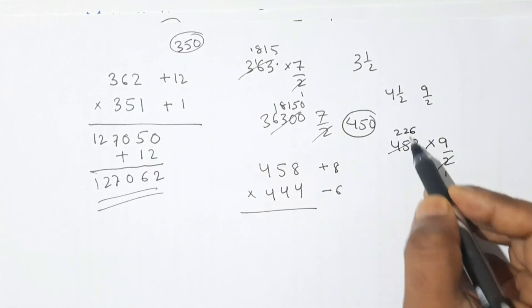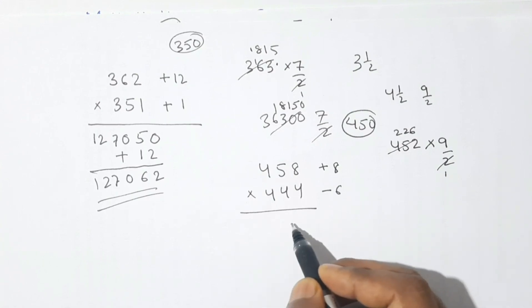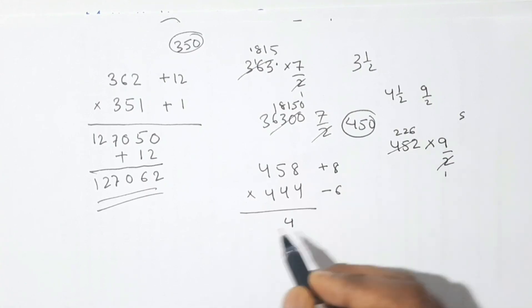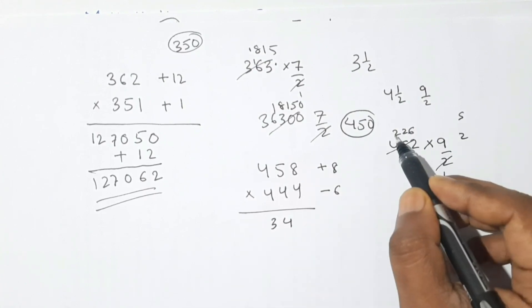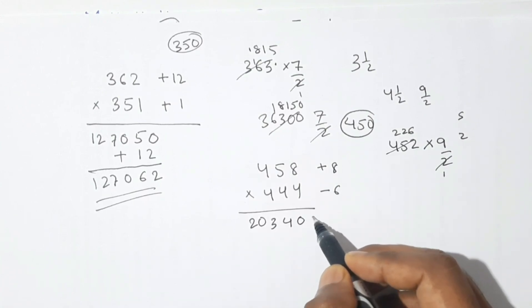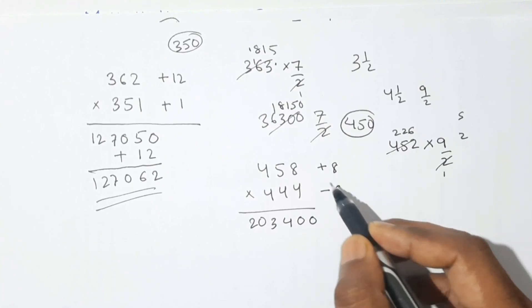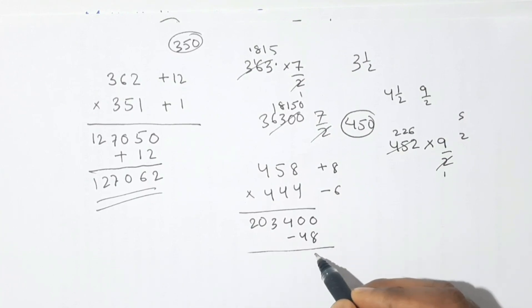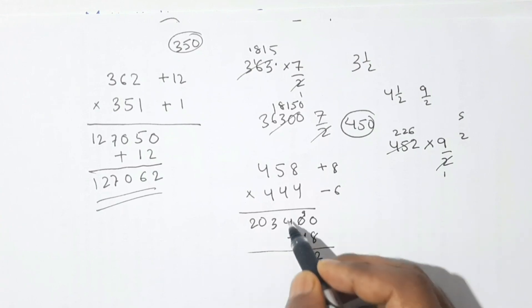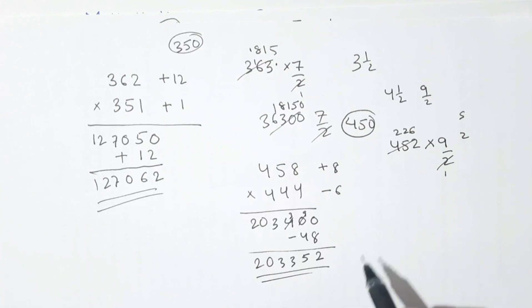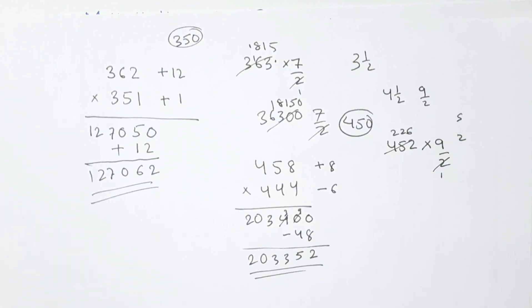Multiplying 452 by 9/2: divide by 2 gives 226, then multiply by 9 — 9×226 = 2034, place two zeros. The deviation product is 8 × (−6) = −48; since the signs are opposite (plus and minus), we subtract 48. Subtracting gives our product: 203352.